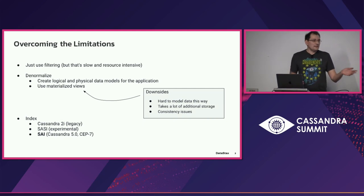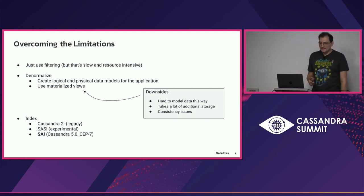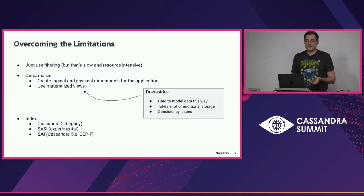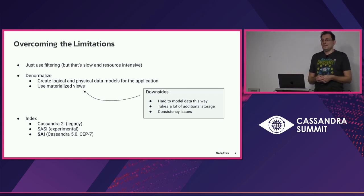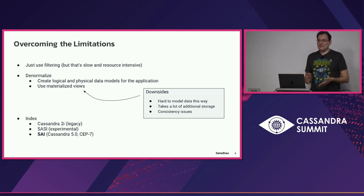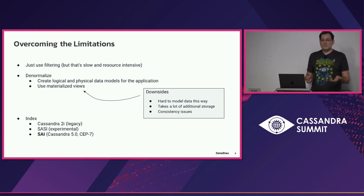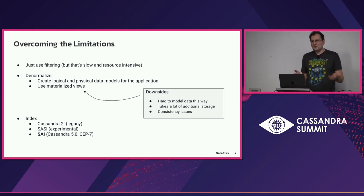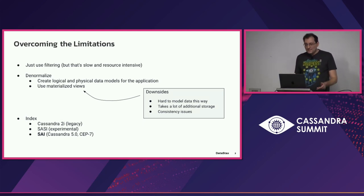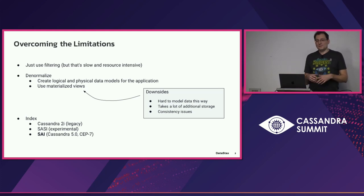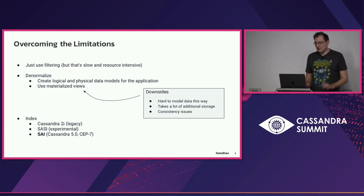Another idea, also presented in the previous Verizon talk, is to normalize by hand — create separate tables where each stores the same data in different order. You direct queries to the proper table, always querying by primary key, which is fast, but it has operational problems like consistency and data duplication. There is also a feature called materialized views that automates some of that, but the current implementation also runs into consistency and operational issues.